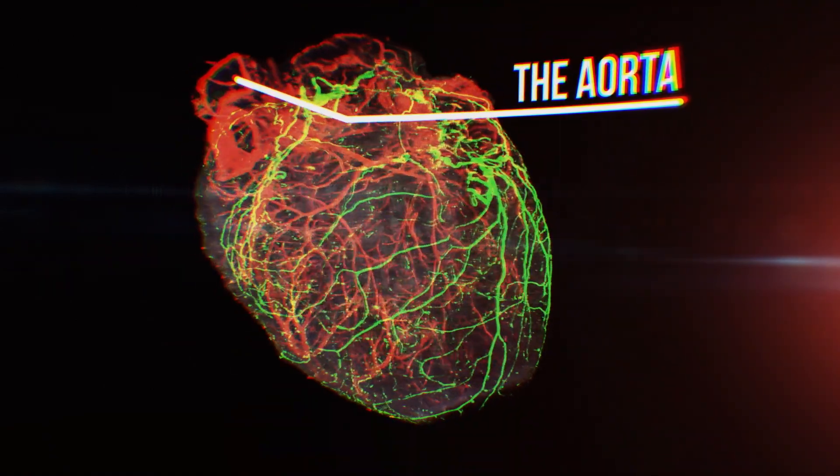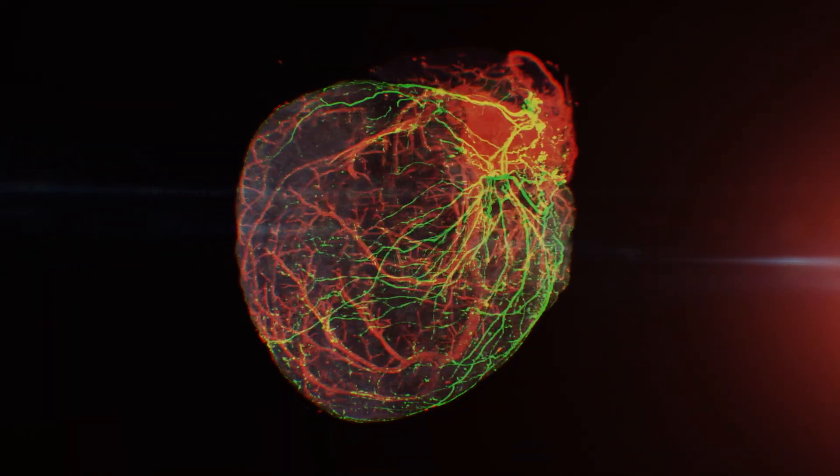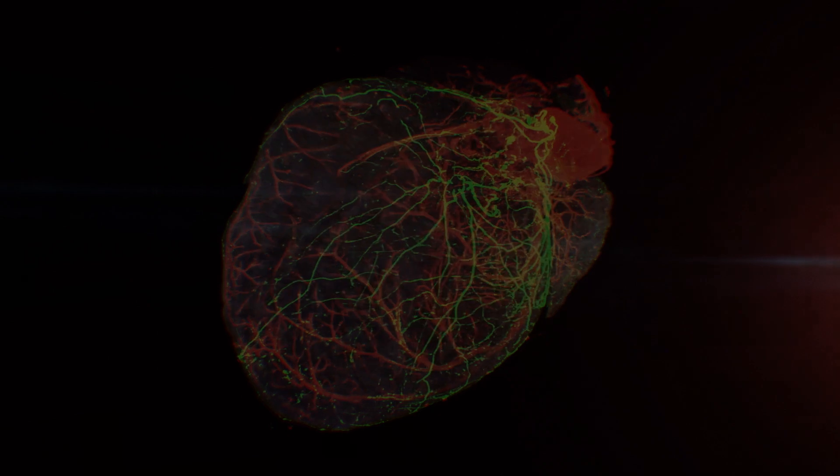But when the flow of blood is obstructed, it can cause an infarction. A myocardial infarction is a potentially life-threatening condition which occurs when the blood flow is interrupted and cardiac cells die.